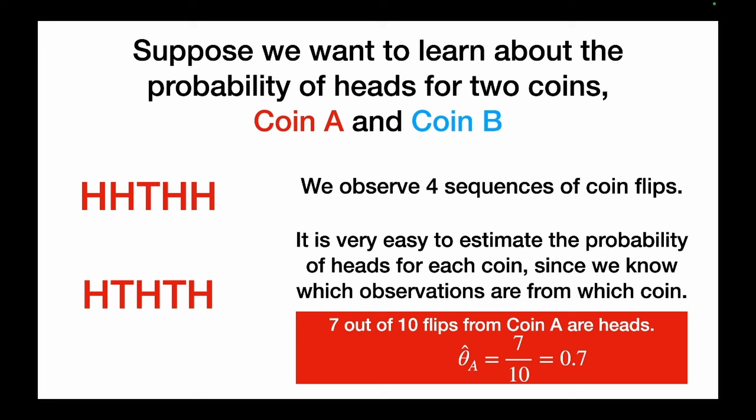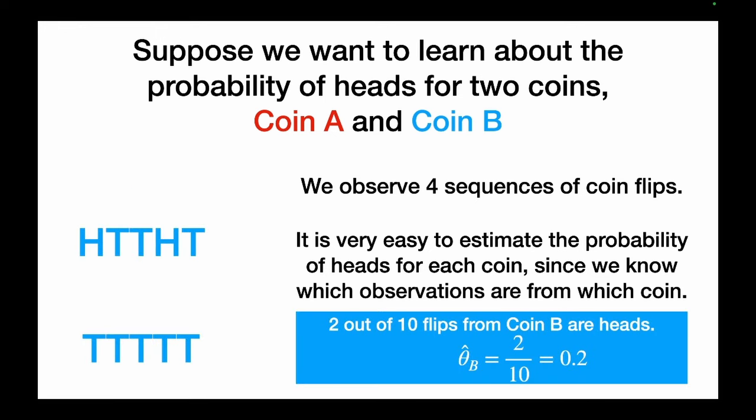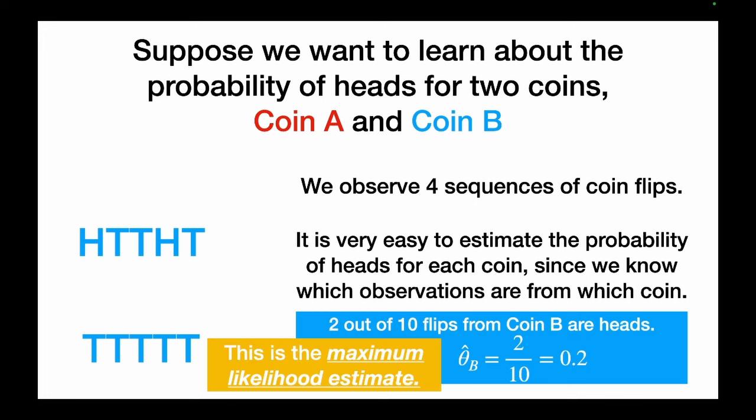It is very easy to estimate the probability of heads for each coin since we know which observations are from which coin. In these two sequences from coin A, seven out of ten flips are heads, so theta_hat_A is 7/10. In the two sequences from coin B, only two out of ten flips are heads, so theta_hat_B is 2/10, or 0.2. This is just the maximum likelihood estimate of theta_A and theta_B.